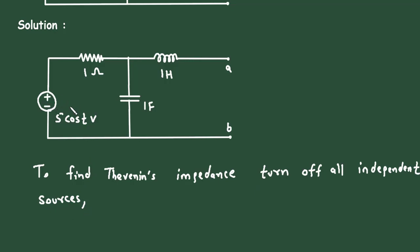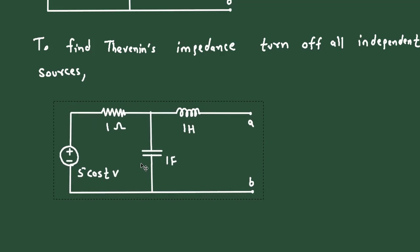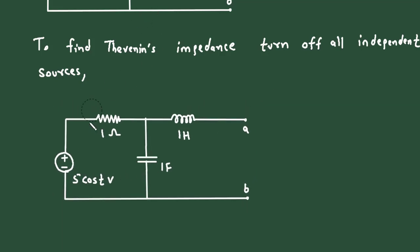Now here we can see there is only one independent source. So when we turn off this voltage source, it will be a short circuit. So we have to replace this by a short circuit. Now we can easily find the value of this impedance Z_AB.